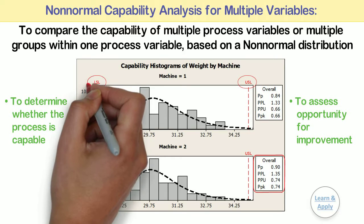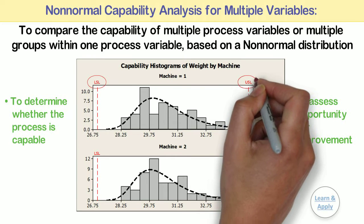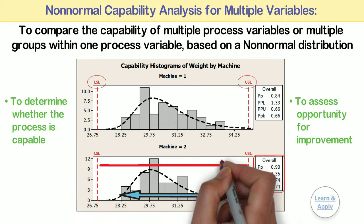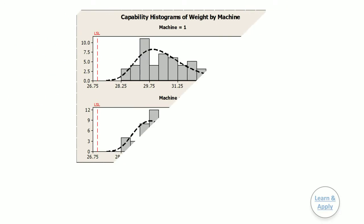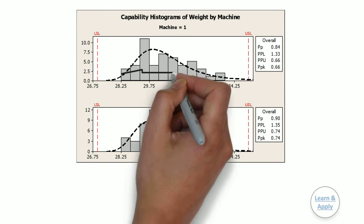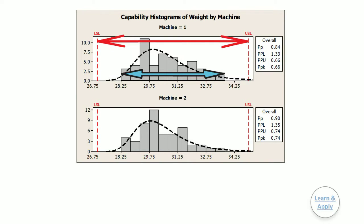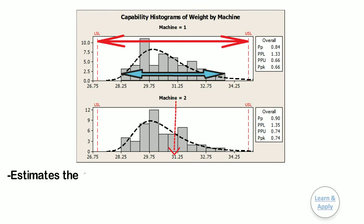To perform this analysis, you must specify lower or upper specification limits or both to define your process requirements. You must also select a non-normal distribution to fit your data. This analysis evaluates the spread of the process data in relation to specification limits. When a process is capable, the process spread is smaller relative to specification spread. This analysis can also indicate whether your process is on target. In addition, it estimates the proportion of product that does not meet specifications.